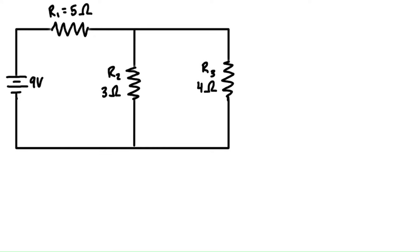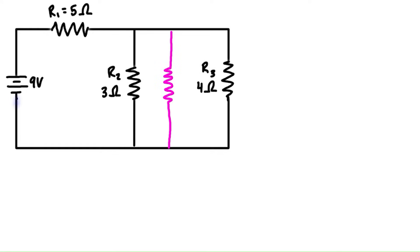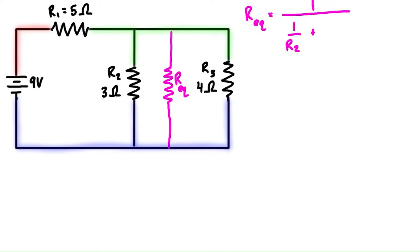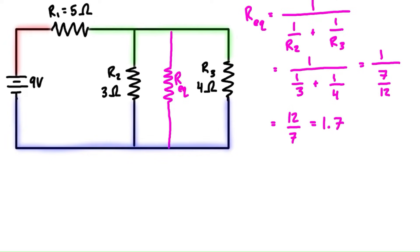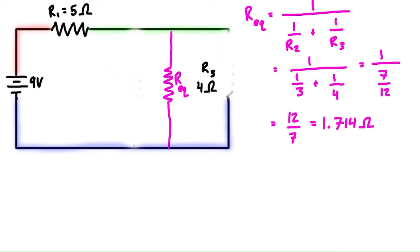To get started we need to identify what the equivalent resistance is from this node to this node. We can draw on an equivalent resistor if it helps, and we can even shade in the different nodes to help identify the difference between them. The equivalent resistance of the two parallel resistors between the green node and the blue node is 1.714 ohms.